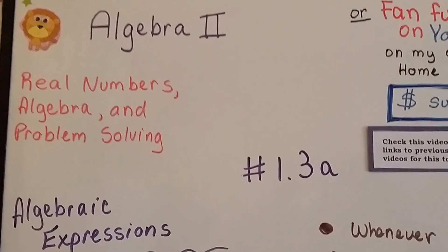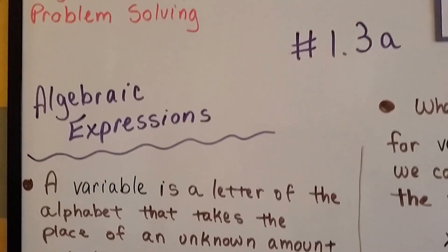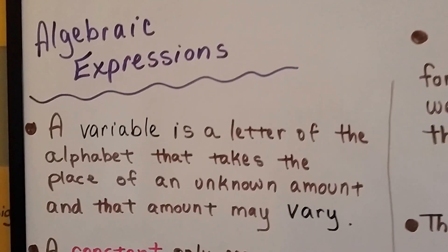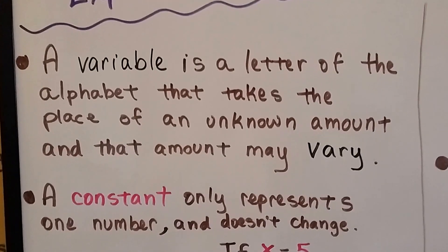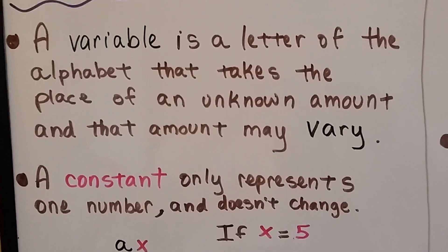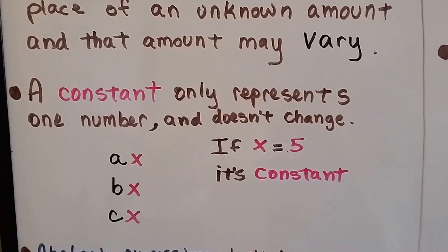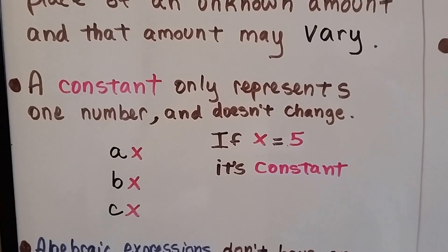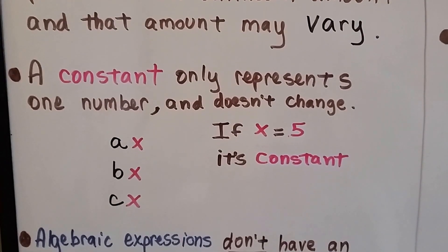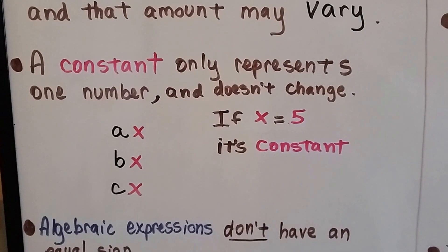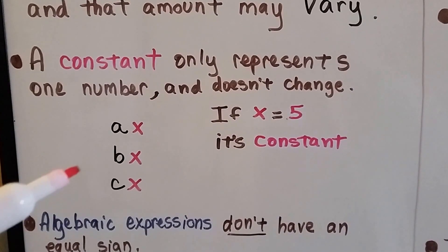Algebra 2, 1.3a, Algebraic Expressions. A variable is a letter of the alphabet that takes the place of an unknown amount, and that amount can vary. A constant only represents one number, and it doesn't change — it doesn't vary throughout the expression or the equation.